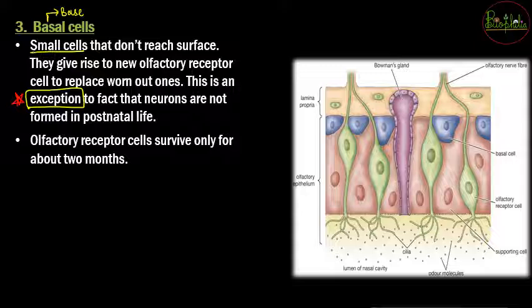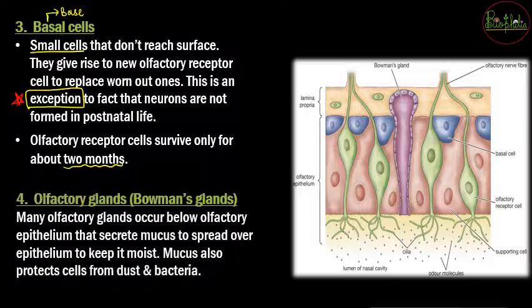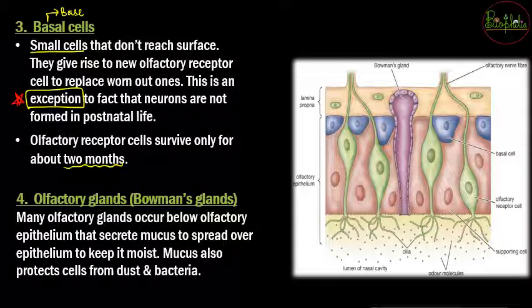The olfactory receptor cells live for about two months. After approximately two months, the basal cells mature and convert themselves into new bipolar cells — that is, new olfactory receptor cells — to replace the ones that have died.